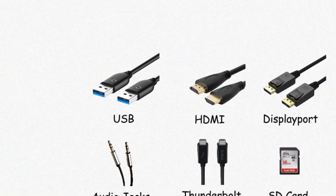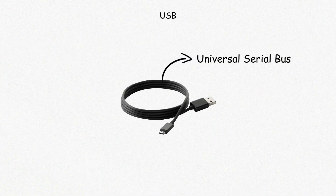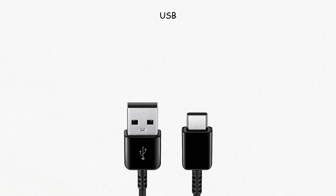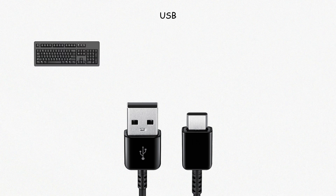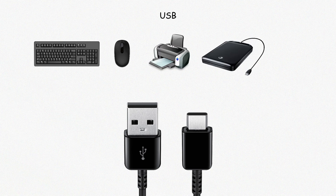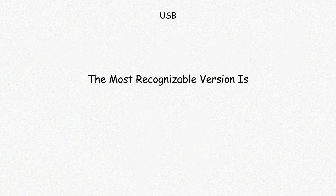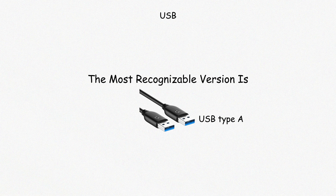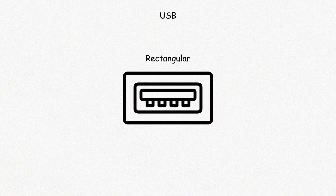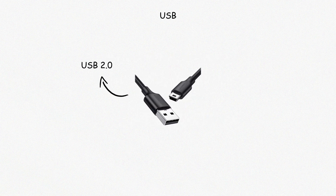USB stands for Universal Serial Bus. It connects devices like keyboards, mice, printers, drives, and phones. The most recognizable version is USB Type-A — rectangular, one-sided, and present on most older computers.